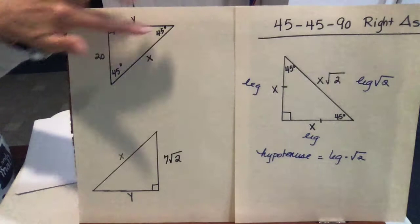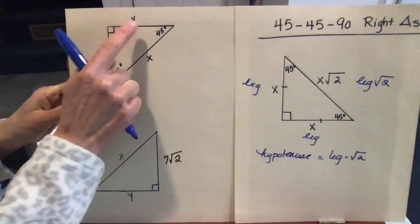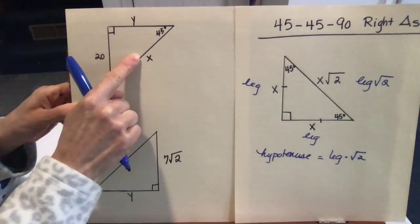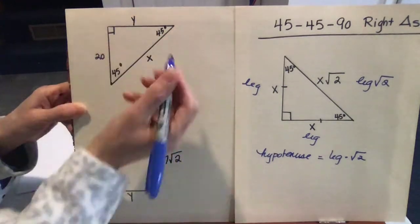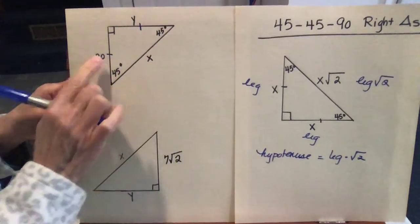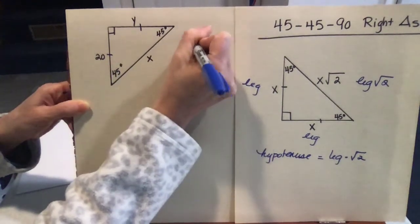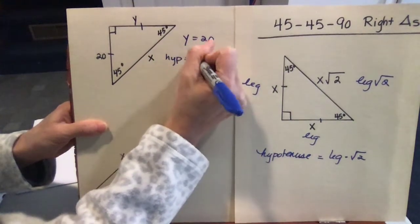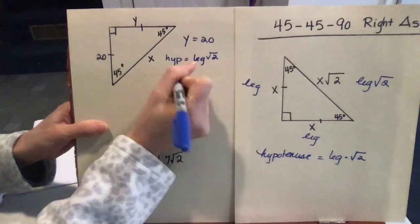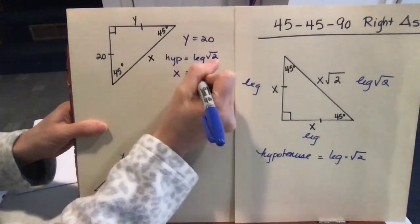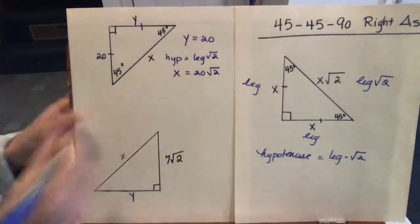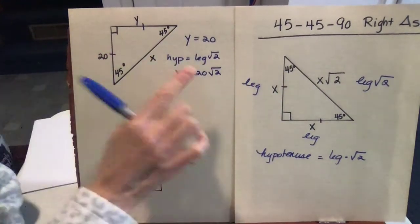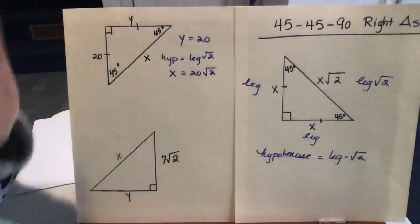We have a 45-45-90 right triangle. The leg is Y, and the other leg is 20. The hypotenuse, which is always opposite the right angle, is X. The easiest one to find is Y, because you know that the two legs are equal, so Y is equal to 20. To find X, the hypotenuse equals the leg times radical 2, so X equals 20 times radical 2. We can leave the answer in radical form as long as it's in simplified radical form.